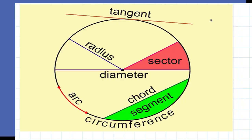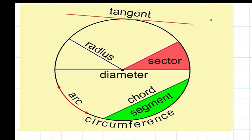Here are some mathematical names of circle definitions, including the radius, sector, diameter, tangent, arc, chord, segment, and circumference.